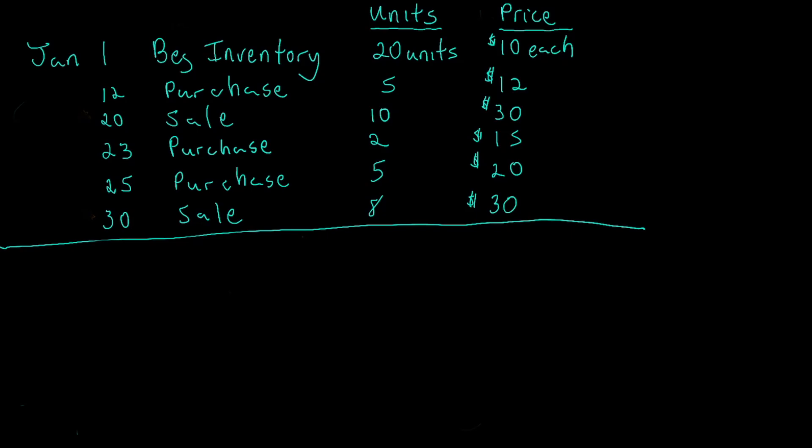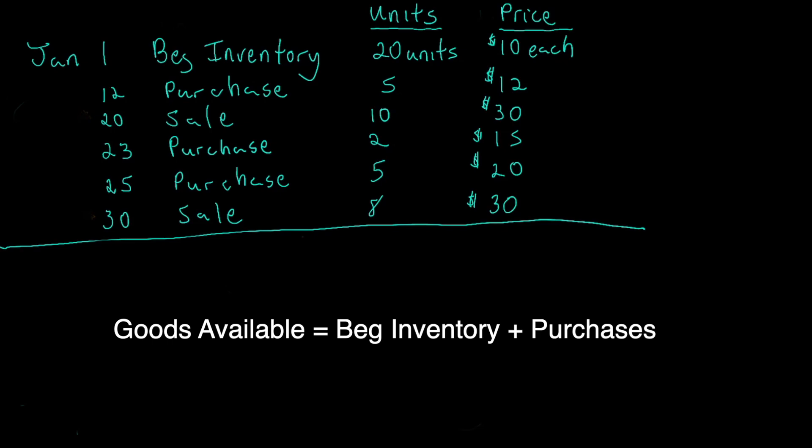We are getting ready to calculate the cost of goods sold and the cost of ending inventory using the average cost method. First, let's identify how many units are available. To calculate units available we simply add beginning inventory plus all of the purchases. We have 20 units in beginning inventory, a purchase on the 12th of 5 units, another purchase on the 23rd of 2 units, and a purchase on the 25th of 5 units. Adding all of those up gives us 32 units available.